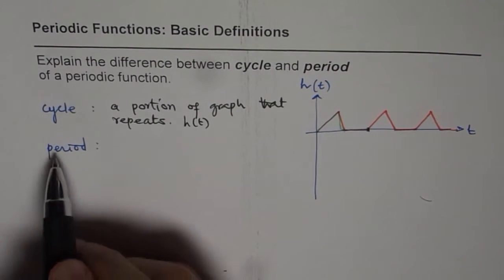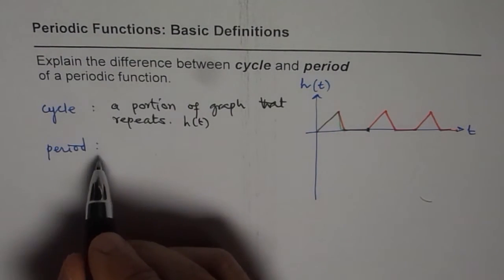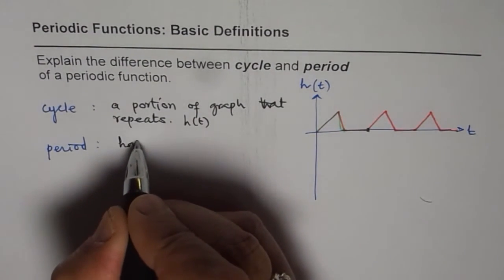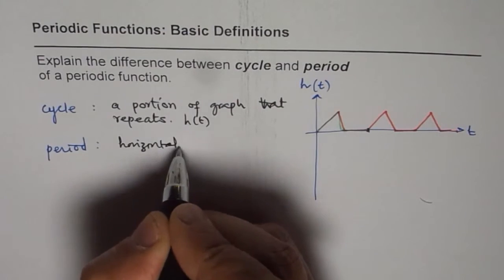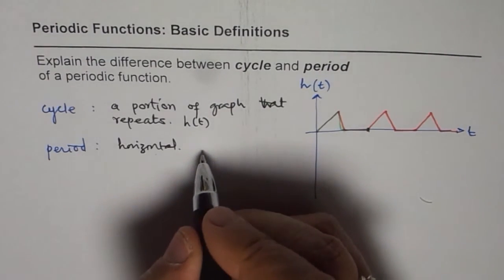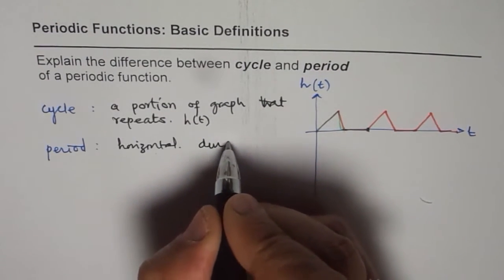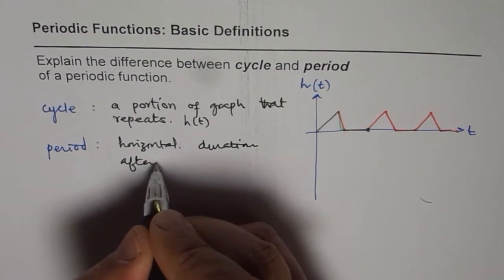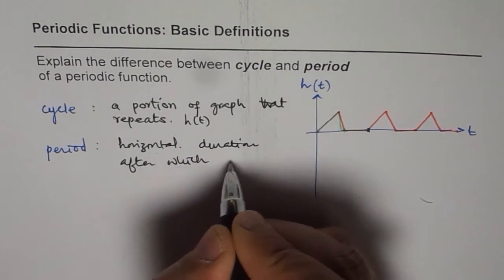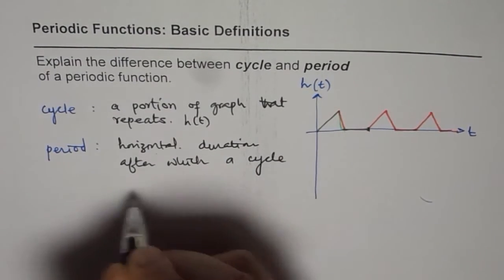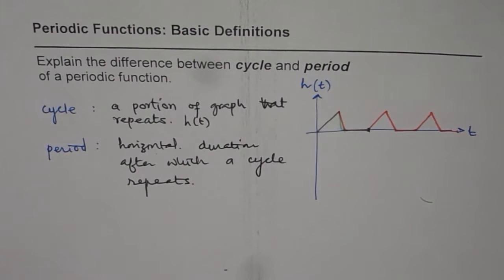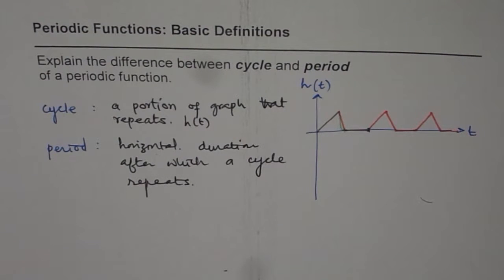And what is the period? Period is along the independent variable—that's the horizontal duration after which a cycle repeats. So if you look like this, then you clearly know what is the difference between the two. Otherwise, there's always a difficulty in understanding this.